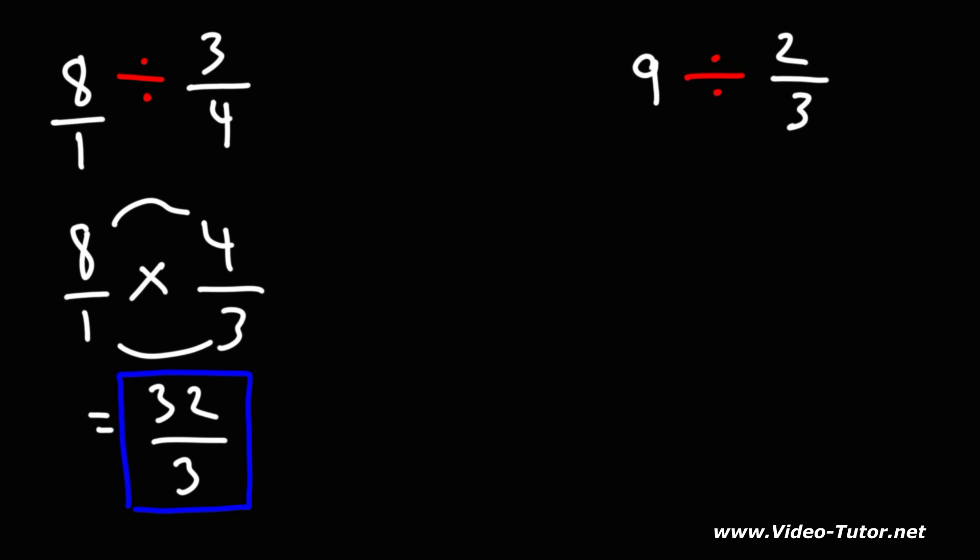Now let's do this same thing for the second example. So let's convert 9 to 9 over 1. Using keep change flip, we'll keep the first fraction the same, change division to multiplication, and then flip the second fraction. So now we can multiply across. 9 times 3 is 27.